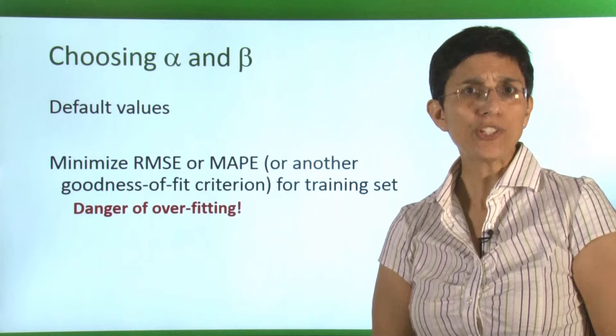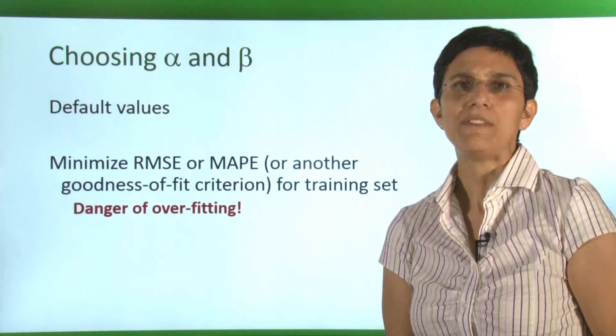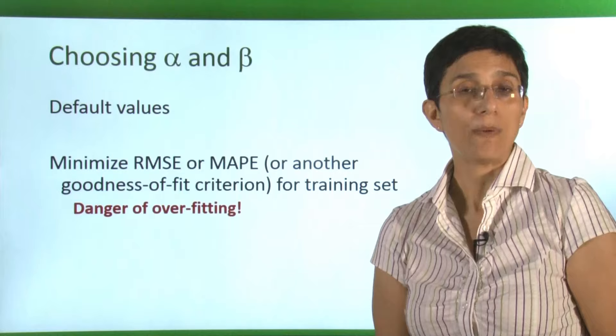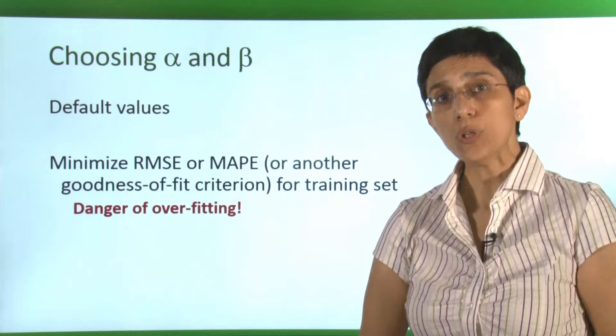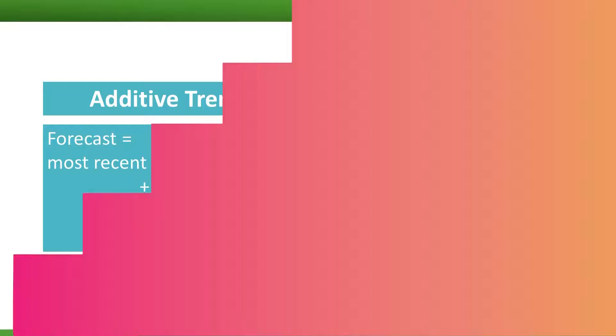How do we choose the smoothing constants alpha and beta? We can use default values that most software provides, based on empirical experience — typically in the range of 0.1 to 0.2. The other approach is to find alpha and beta that minimize an error metric such as RMSE or MAPE over the training set. However, if you do that, you have to be careful of overfitting, because optimized alpha and beta values may not generalize well into the future.